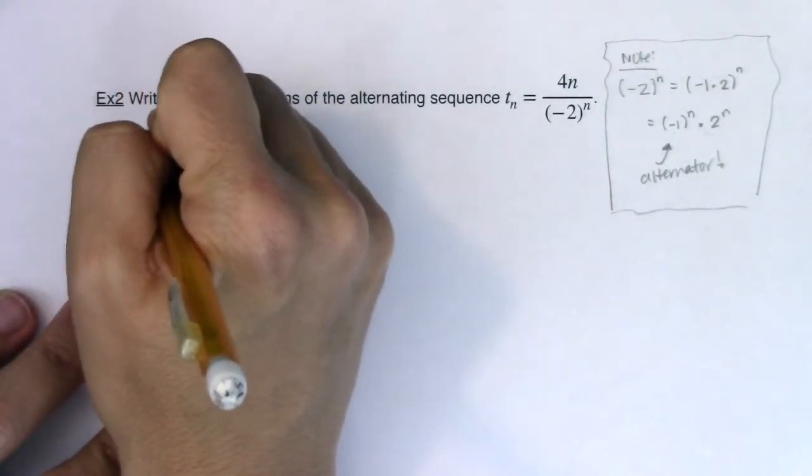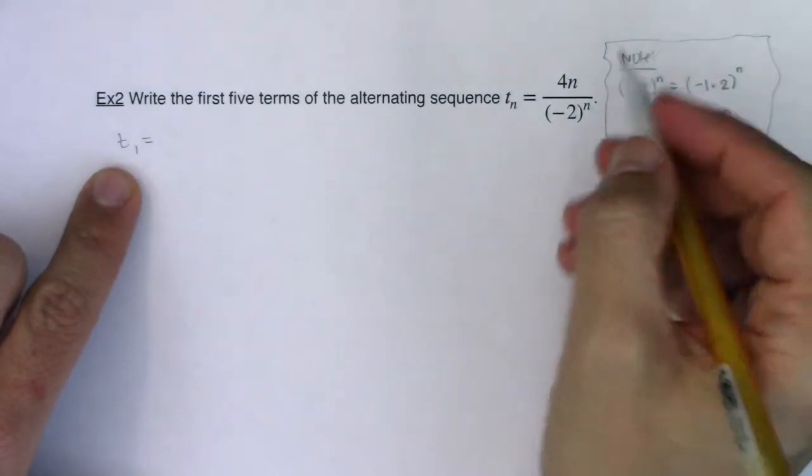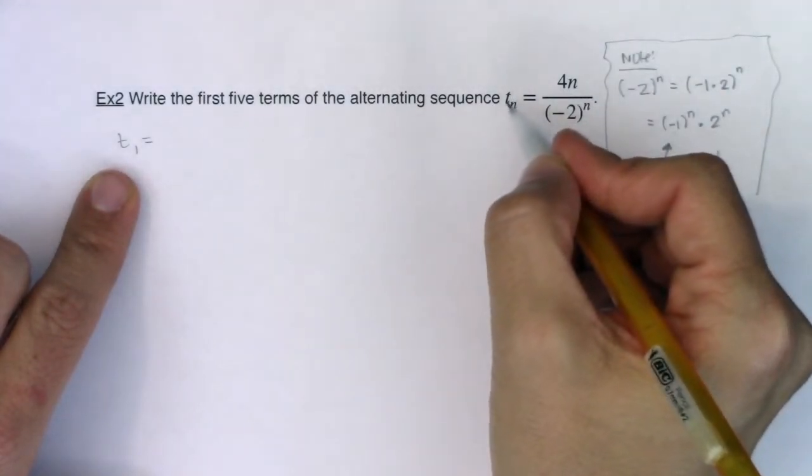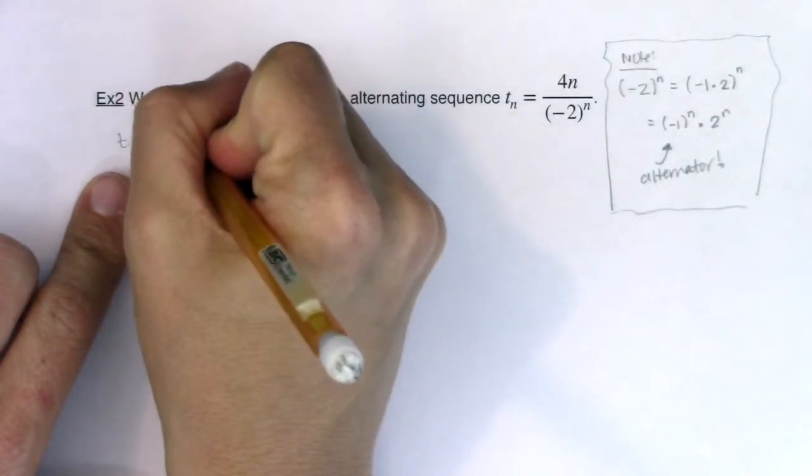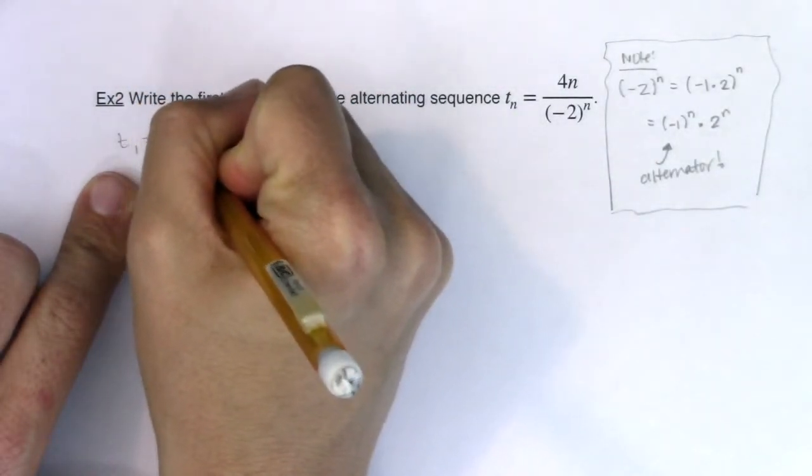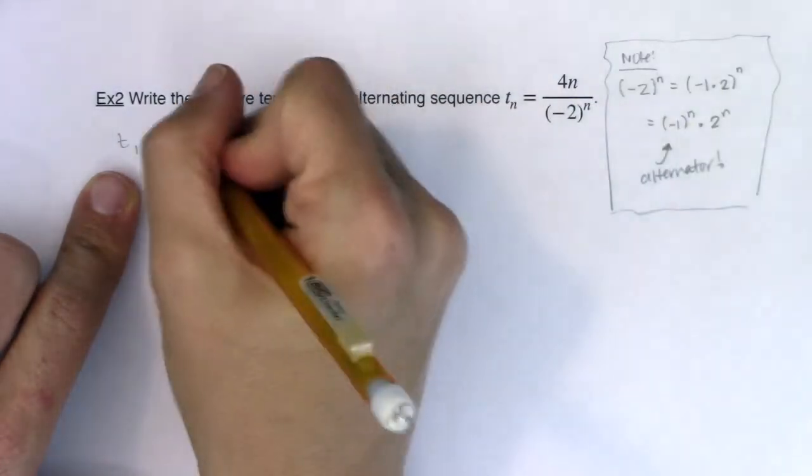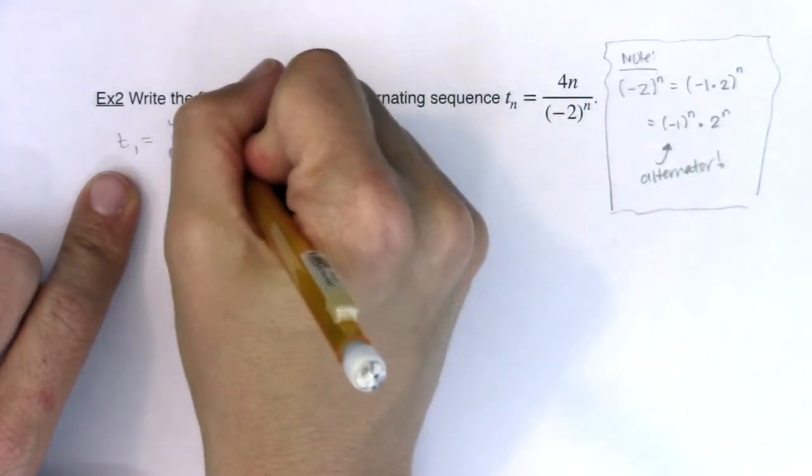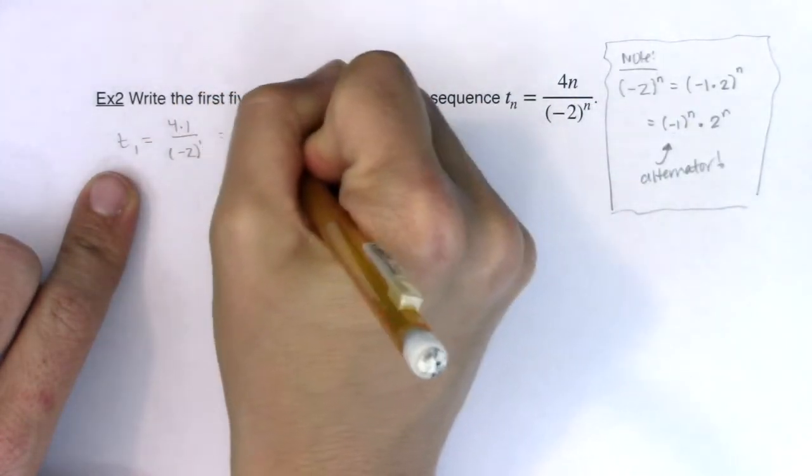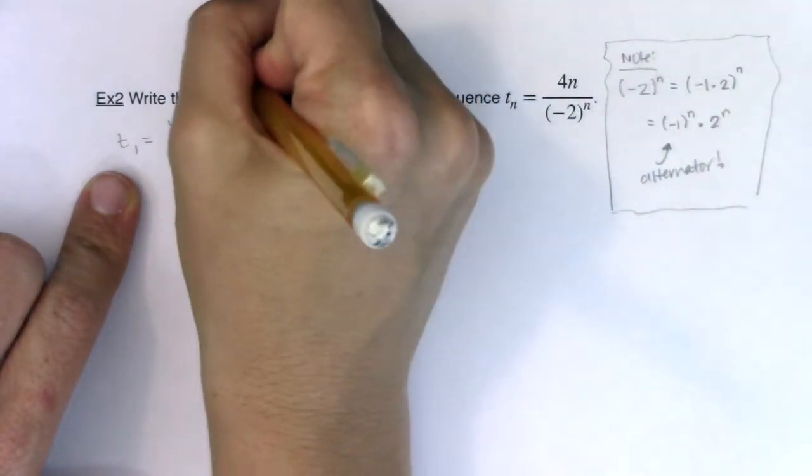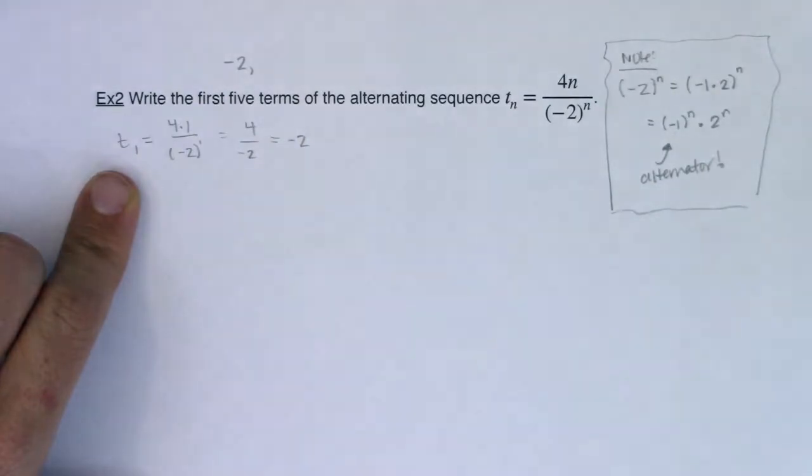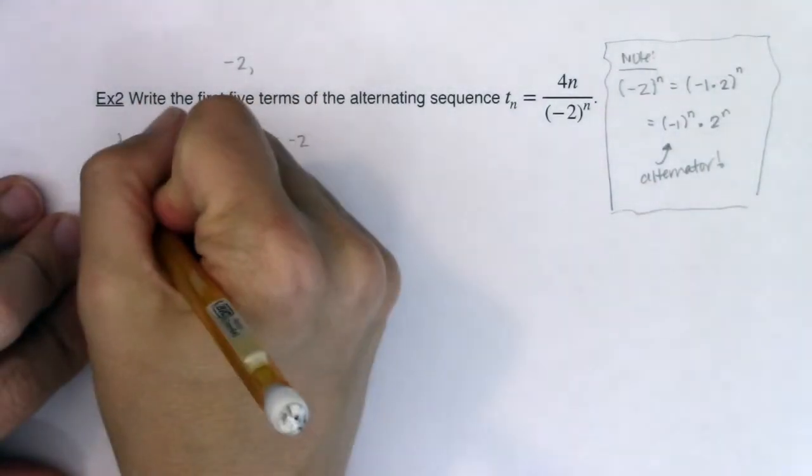Let's find t sub 1. So if I want the first term in my sequence, yes I'm using a different letter than a, but that's okay, same rules apply. So I'm going to have this become 4 times 1 over negative 2 to the first power. So 4 times 1 is 4, in ratio to negative 2 winds up being negative 2. So if I'm keeping track, the first term in my sequence is negative 2.